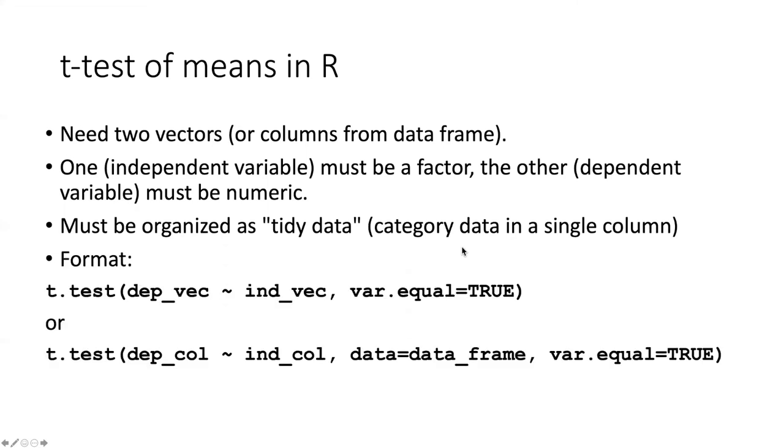We can then carry out the t-test by using one of the following two formats. If the source data are vectors, we can put the dependent variable and then a tilde and then the independent variable in terms of the names of the vectors first followed by a comma. And then the second argument is that the var.equal attribute is TRUE. That's because the kind of t-test of means that we are doing is a test for two samples that have equal variances. There is another alternative that can be used if the variances are not equal.